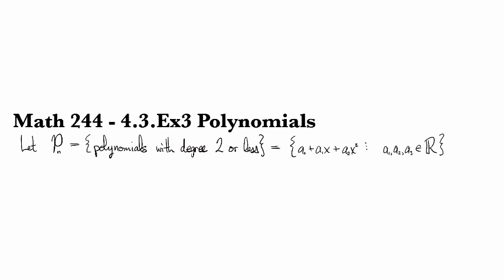There are also vector spaces of polynomials. So let's take P2 to be the polynomials of degree less than or equal to 2. So this looks like a constant, plus a linear term, plus a quadratic term, where each of those coefficients is required to be a real number.